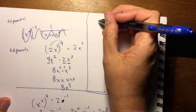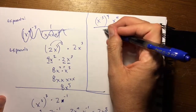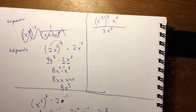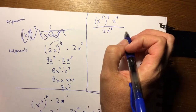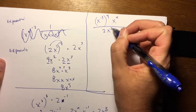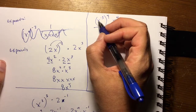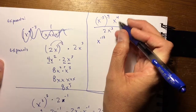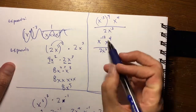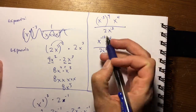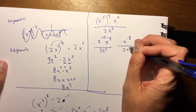Try this one: x to the negative 3rd, raised to the 4th, times x to the 4th, divided by 2x to the negative 3rd. Pause it, try it, then come back and check your work. You should first deal with the parentheses: x to the negative 3 times 4 is x to the negative 12th. Then we have x to the 4th hanging out next to it, and 2x to the negative 3 underneath. So x to the negative 12th times x to the 4th — just add the exponents — gives x to the negative 8th over 2x to the negative 3rd.